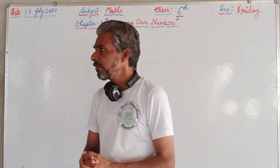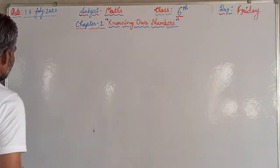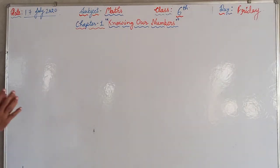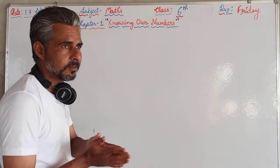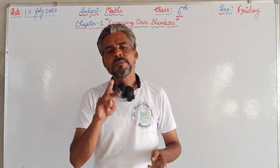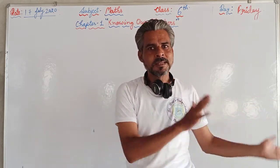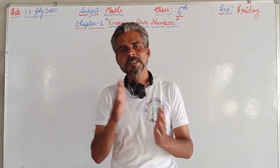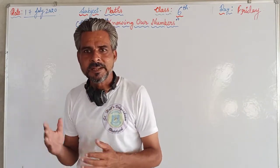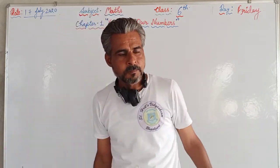We have discussed in this chapter how to write the given numbers in words according to two different systems: one is the Indian system of numeration, and the second one is the international system of numeration.